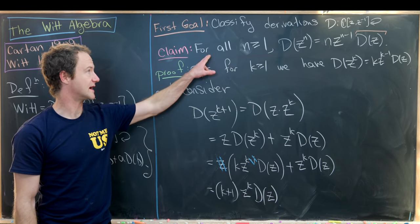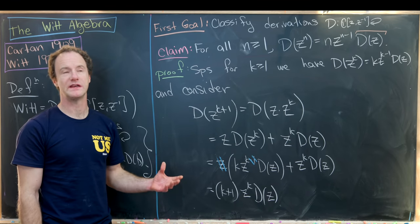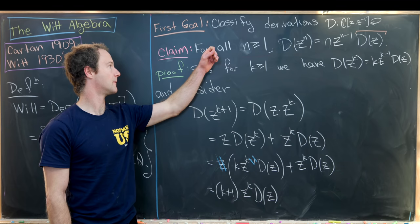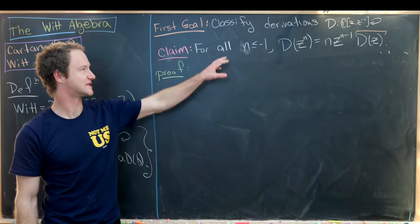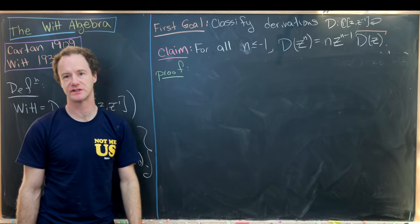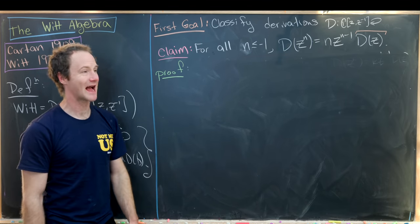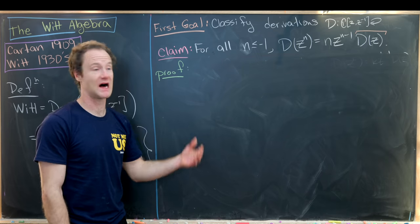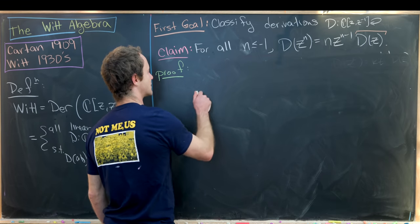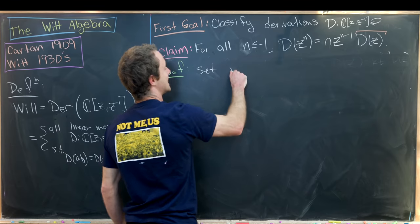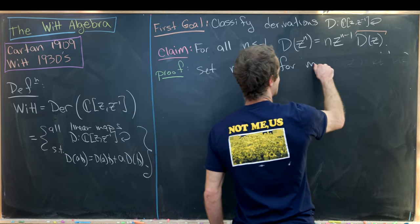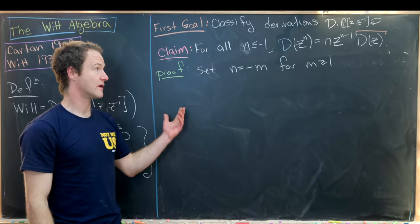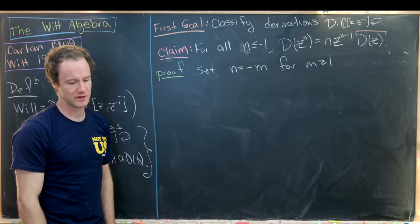That finishes the proof for positive N. We also need a similar claim for negative values of N — specifically for N ≤ −1. We won't need induction here because we can use information from the positive case. Since N ≤ −1, we set N = −M for M ≥ 1, and use the fact that we know the derivation applied to z^M.